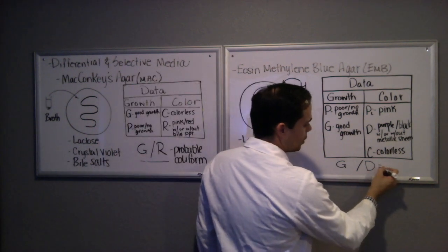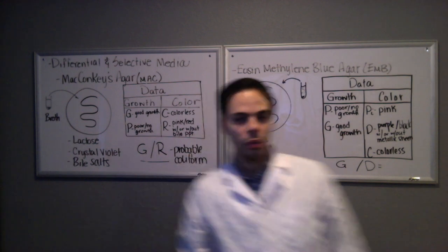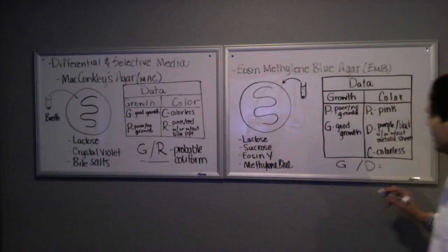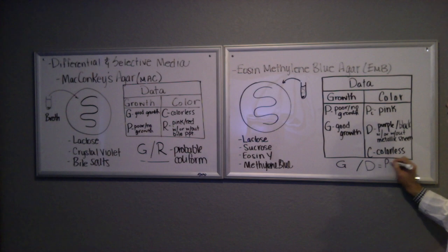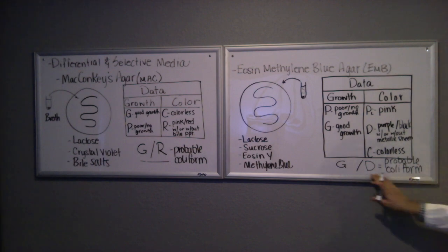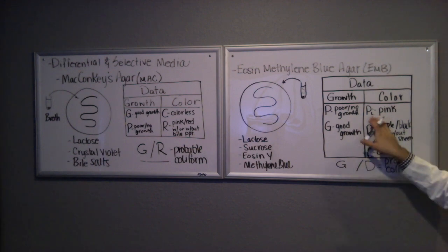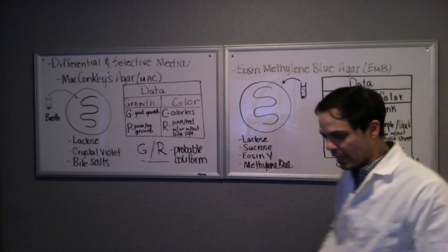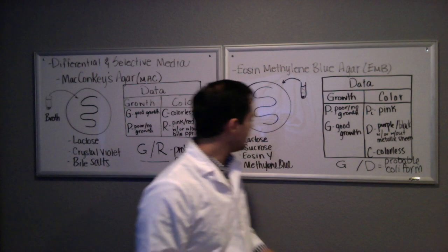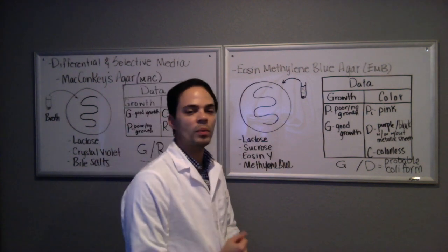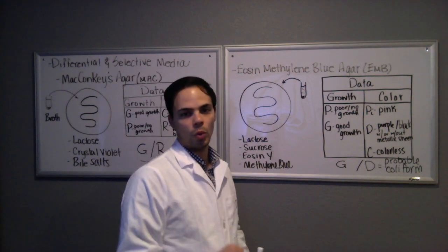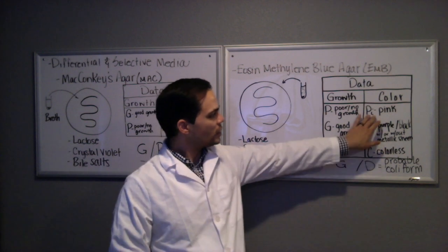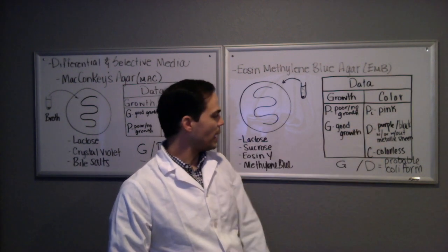These dyes will help it form that color. So if you get G and D as your results, we can presumptively conclude that this is a probable coliform. If it gave you G and PI, that means it didn't have as strong of a fermentation of the sugars, and so we would say possible coliform. So possible coliform versus probable coliform.